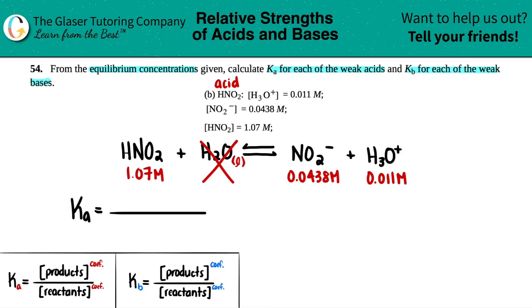I got two products. And remember, in the KA equation, they are multiplied by each other. And then you have the one down here. So products divided by reactants, it would be NO2 minus times the hydronium H3O plus divided by HNO2.